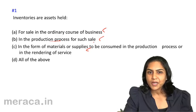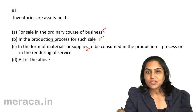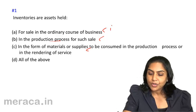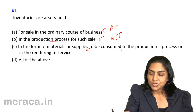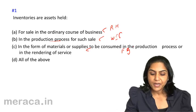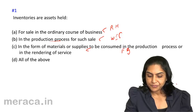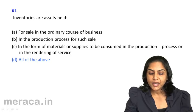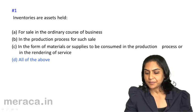The answer should be all of the above, because inventories include raw materials, work in progress, and finished goods. So our answer should be Option D — all of the above is right.